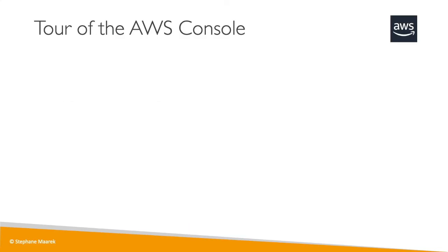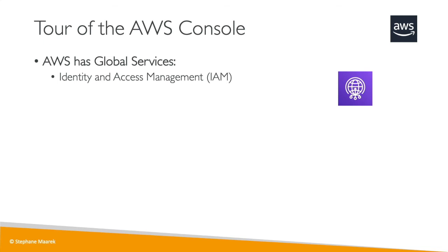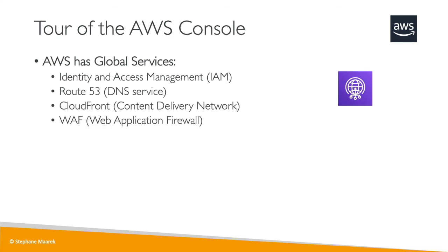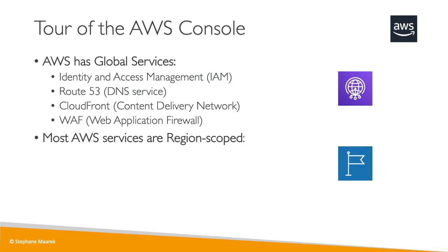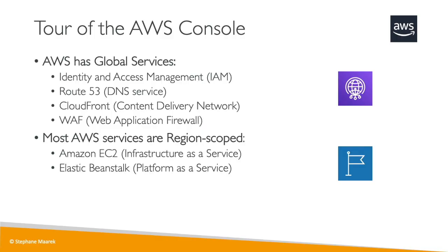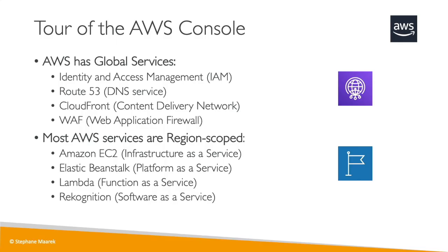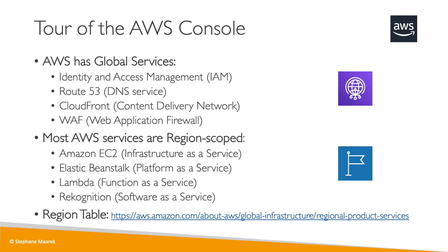Now let's do a tour of the console. It has global services such as IAM, Route 53, CloudFront, and WAF, but most AWS services are region-scoped, such as Amazon EC2, Elastic Beanstalk, Lambda, and Rekognition. Finally, to know if a service is available in your region, there is a region table you should check out.